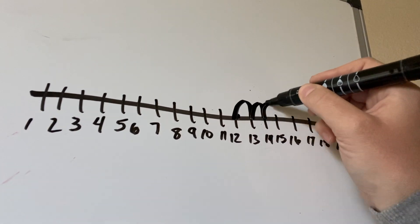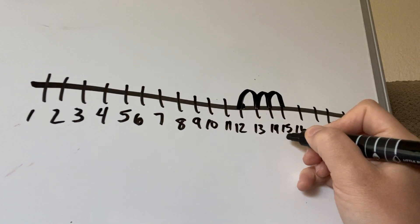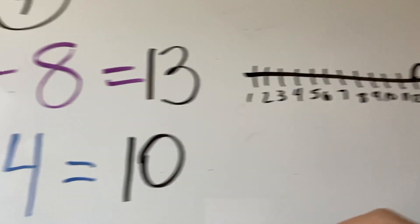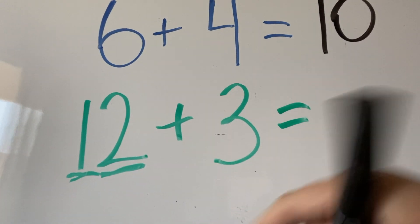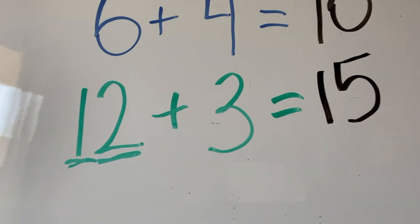12 plus three, we know we need to start at 12 and make three hops. One, two, three. And we can see we land on number 15. So that's going to tell us that 12 plus three equals 15.